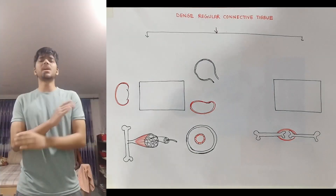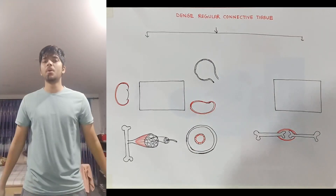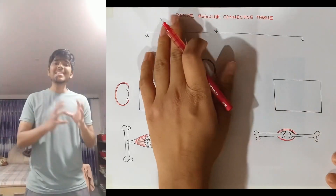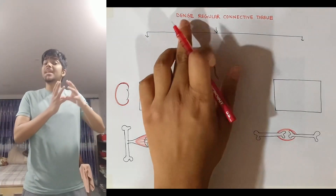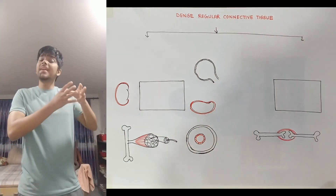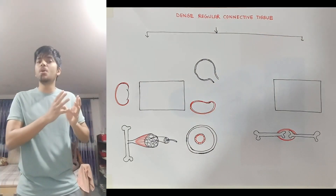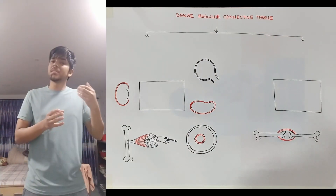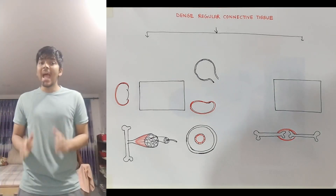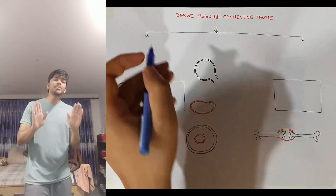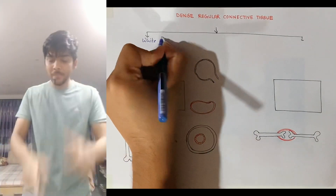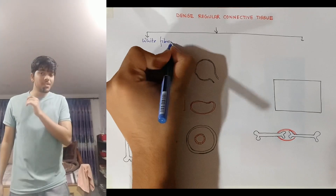We are done with loose connective tissue. Now it's time for dense connective tissue. Under dense connective tissue we have dense regular connective tissue, and under dense regular connective tissue we have yellow fibrous connective tissue and white fibrous connective tissue. We are going to compare both these fibrous connective tissues in this video. First let's look at the name of the tissue.